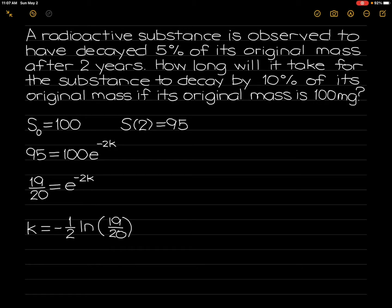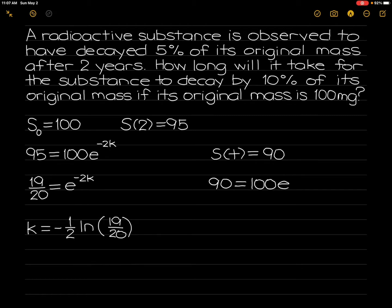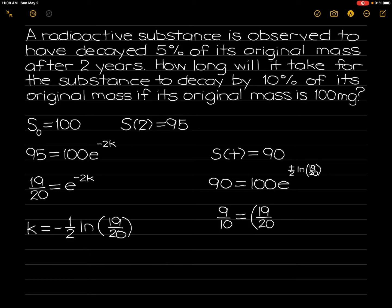We will now solve for t wherein the amount present will be 90. So, 90 is equal to the initial amount 100 times e raised to the negative k times t, which becomes t over 2 times the ln of 19 over 20. Simplifying will give us 9 over 10 is equal to 19 over 20 raised to t over 2.